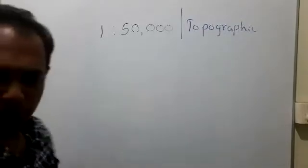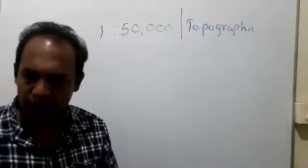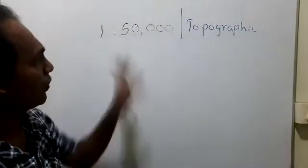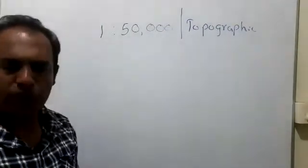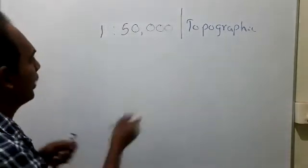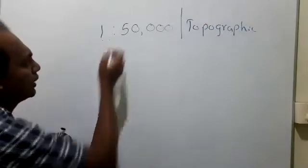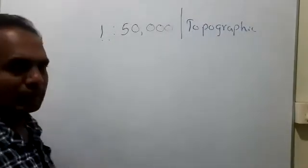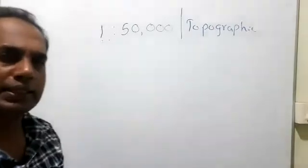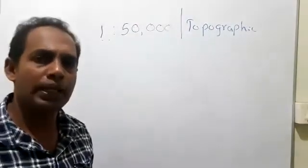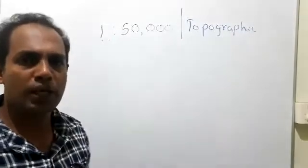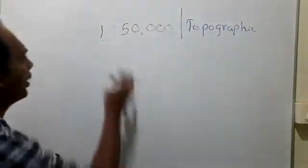Let's start. The topic is the 1 to 50,000 topographic map. What is this scale? It is a scale used by the survey department and it is the most famous scale. There are many other scales but this is the most famous one.